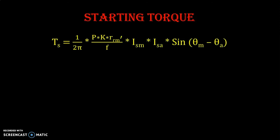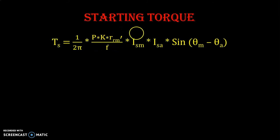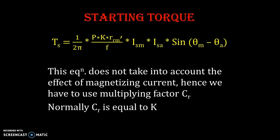We have an equation for TS, the starting torque, which was derived in the previous lecture. The equation is: TS = (1 / 2π) × P × K × RRM' / F × ISM × ISA × sin(θm − θa), where P is number of poles, K is turns ratio, RRM' is rotor resistance referred to the stator, F is frequency, ISM is starting current of the main winding, and ISA is starting current of the auxiliary winding. This equation does not take into account the effect of magnetizing current, hence we have to use one multiplication factor CR.